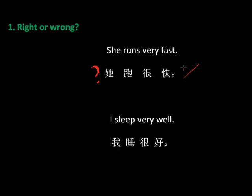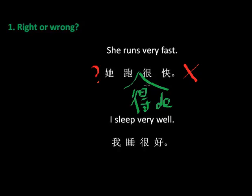No. In Chinese, we don't say like this. 我们不说她跑很快。We need something else. 你知道吗？对，所以在这里应该有一个 得。她跑得很快。这个是对的，她跑得很快。